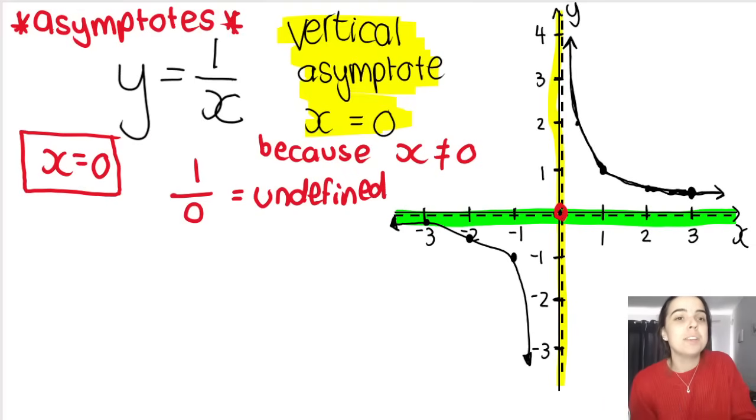And I've drawn in here that my vertical asymptote, the one that I've highlighted in yellow, is where x is equal to 0. So you can see where this dotted line cuts the x-axis. It is at the point where x is equal to 0, that's where it cuts the x-axis. And the reason why we have an asymptote there is because x in my function cannot equal 0, because 1 divided by 0 is undefined. And this is why we don't have a y-intercept.